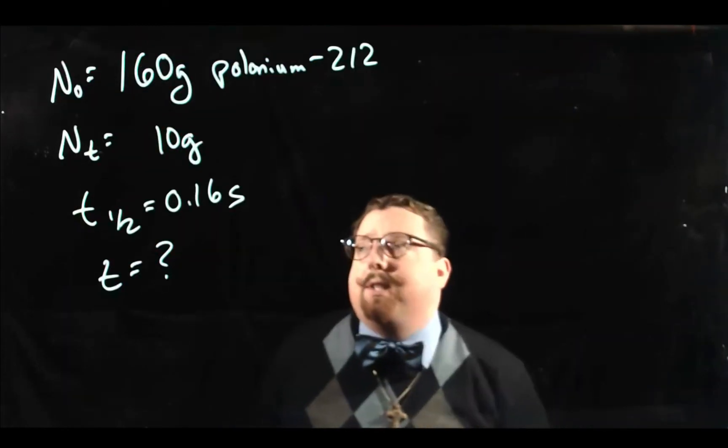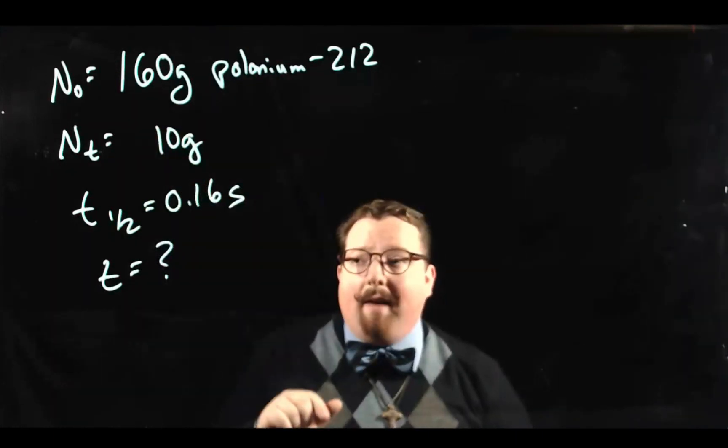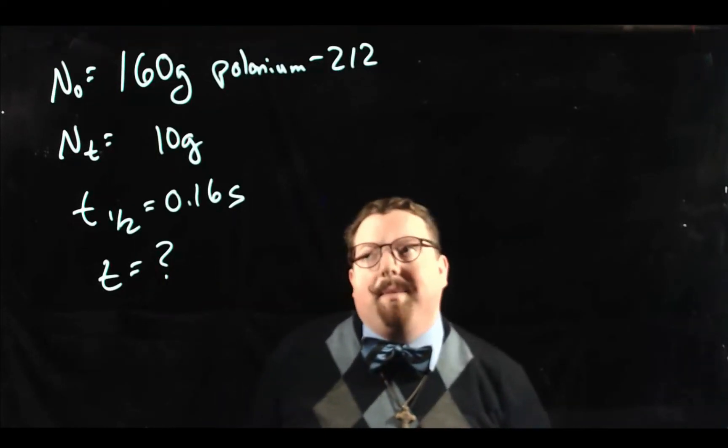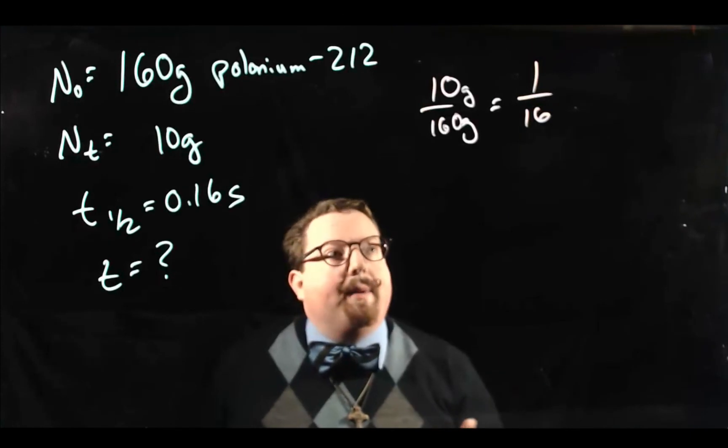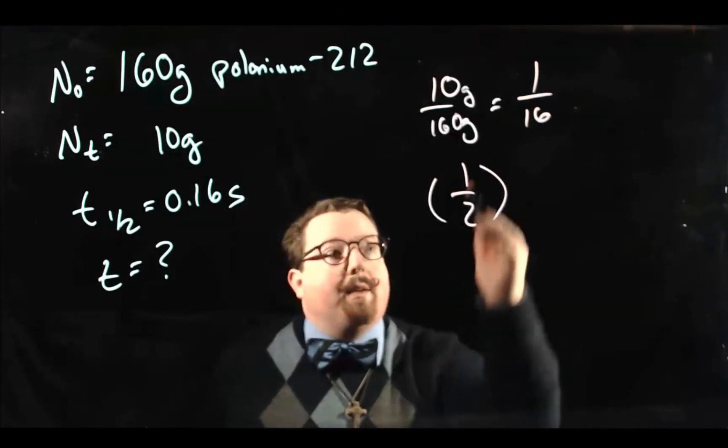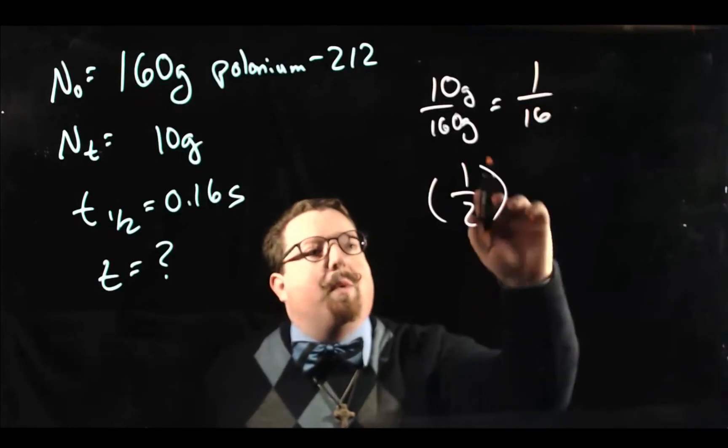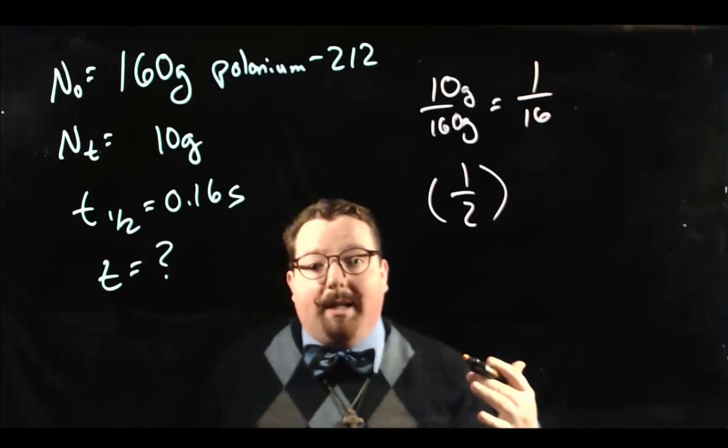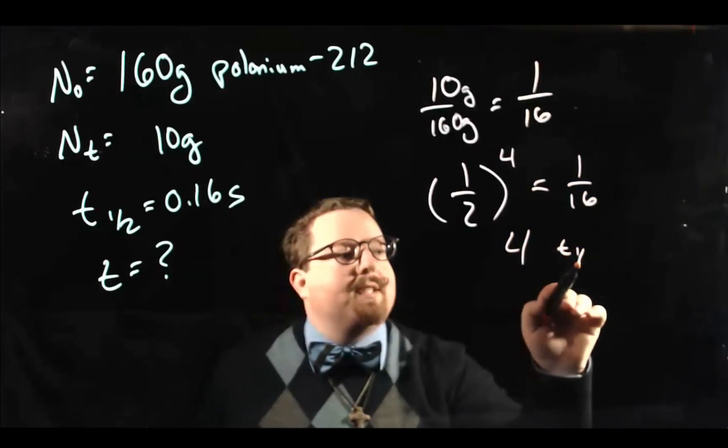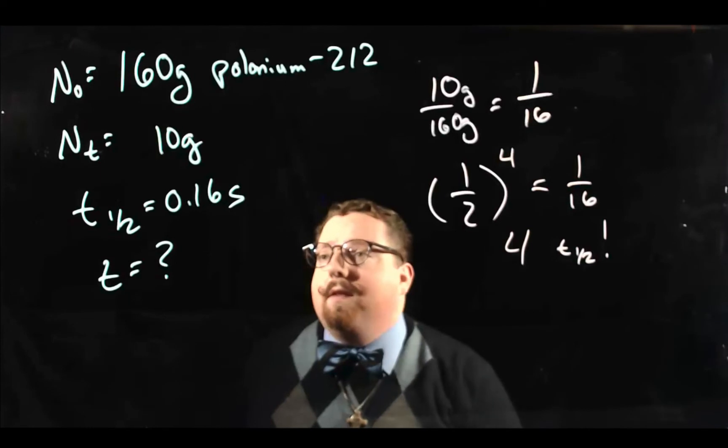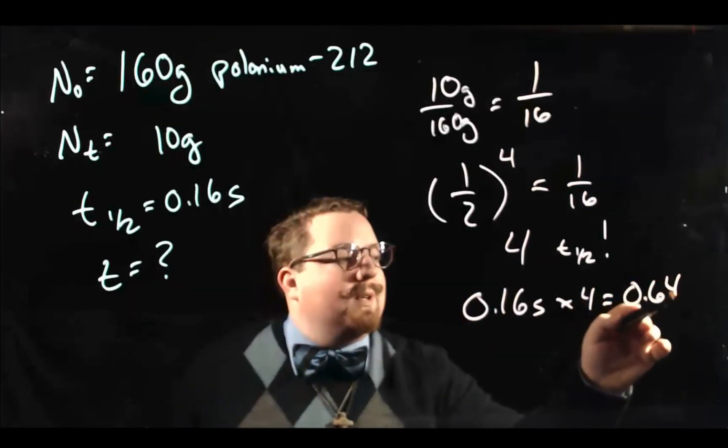Example problem 3 is pretty similar to problem 2. Now this time you have 160 grams of polonium-212, and it decays down to 10 grams with a half-life of 0.16 seconds. How long does that take? So you do the same kind of thing. Take your 10 divided by 160, and that gets you 1 sixteenth. And then you figure out how many times you have to take 1 half times itself to get 1 sixteenth. Another way to think about it, instead of multiplying 1 half by 1 half by 1 half, just take an exponent. If you do 1 half squared, that gets you 1 fourth. 1 half cubed is 1 eighth. 1 half to the fourth is 1 sixteenth. So that means it took us 4 half-life cycles. So if our half-life is 0.16 seconds, multiply that by 4 and you get 0.64 seconds.